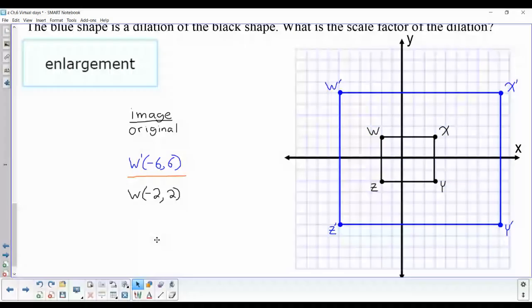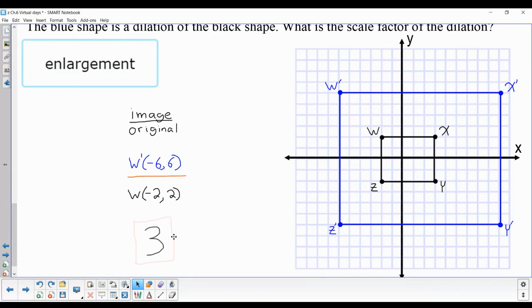Since when dividing them you would get 3, it means your dilation is 3. I could have done this with any of the points that we were given. Any of the points, or x or y coordinates, as long as you put the image over the original, is going to give you a dilation with a scale factor of 3. Thank you.